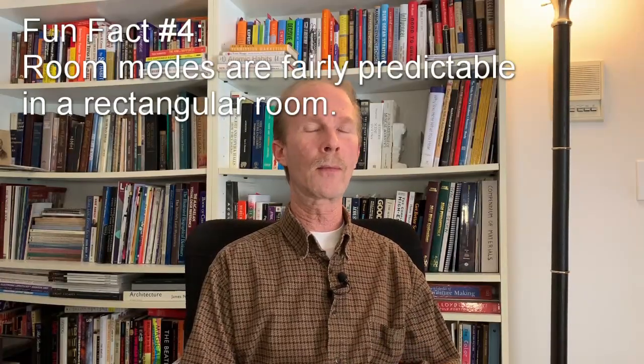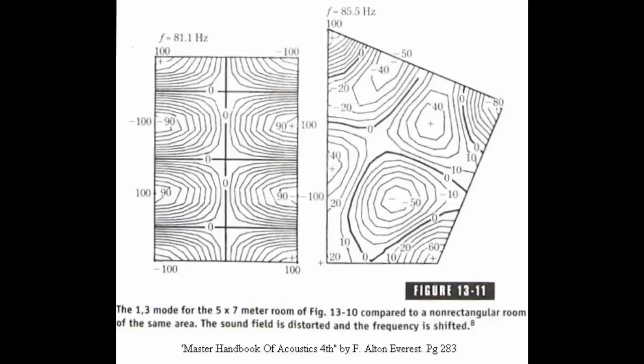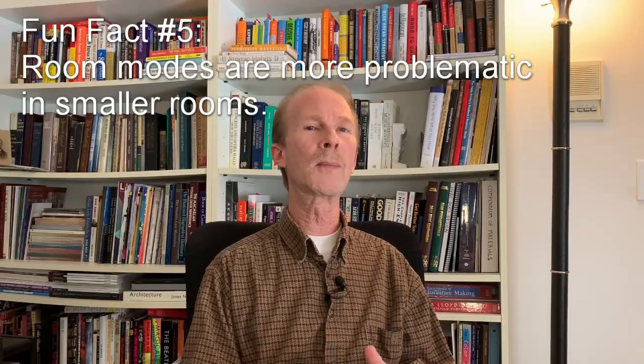Room modes are pretty predictable in a rectangular room — you can see a particular resonating frequency at 81.1 Hz as an example. However, if you splay the walls, which is a common misnomer applied to playback systems, it will shift the frequency and make it nearly impossible to predict what frequency occurs where and how to treat it. You'd have to physically measure with at minimum an SPL meter. A splayed wall just introduces chaos into what would otherwise be an organized, easy-to-predict situation.